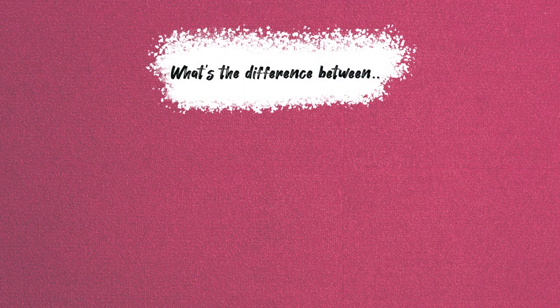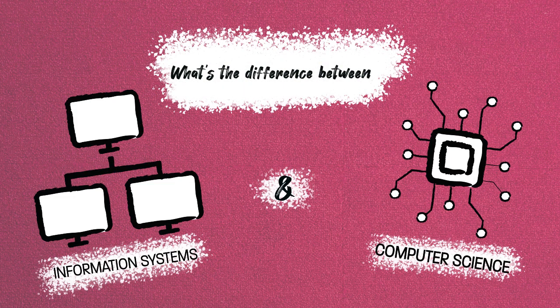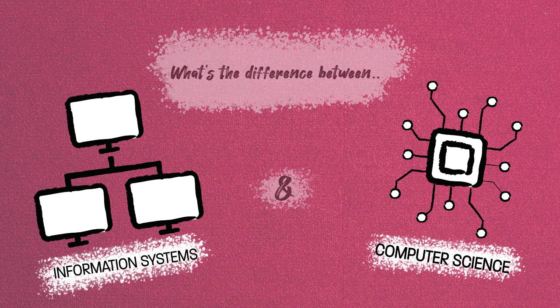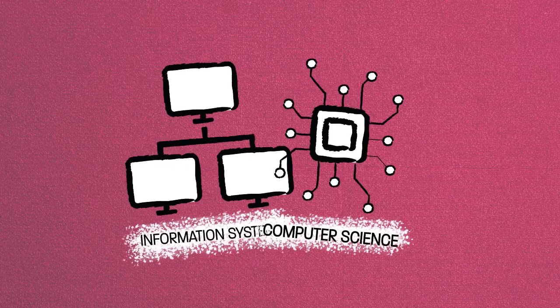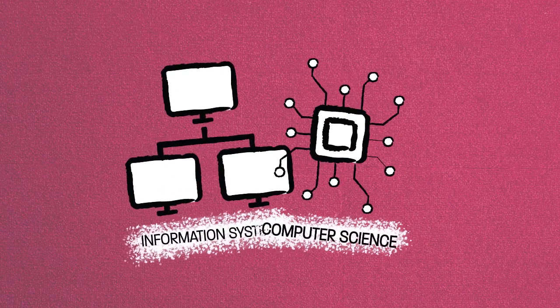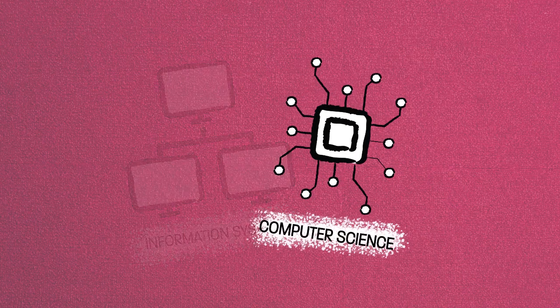What's the difference between information systems and computer science? There is overlap between the two fields, but their approaches are different.